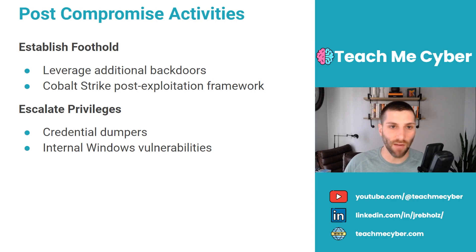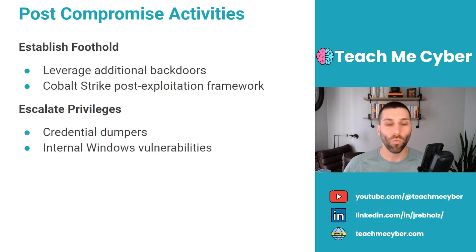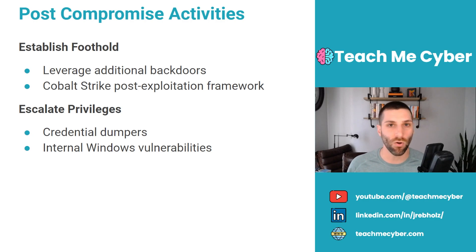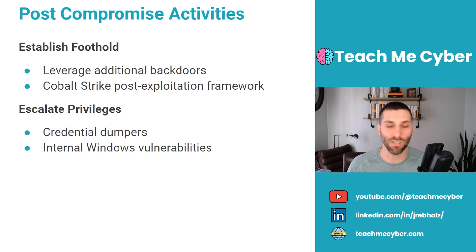As they entrench themselves in the environment, they're going to be establishing a larger foothold. Typically, this involves deploying additional backdoors to that initial system so they have access back in without needing to re-compromise it. We also see a lot of post-exploitation frameworks dropped on these systems. One of the more popular ones is Cobalt Strike — it packages all these different attacker tools into one solution. The attacker installs it, gets remote access, moves laterally to other systems, and runs exploits. It's really a one-and-all solution that attackers can use to move throughout the environment.